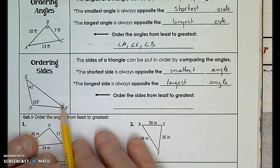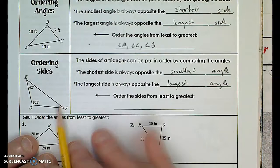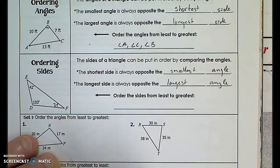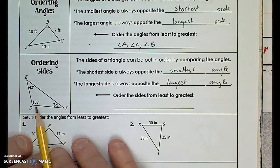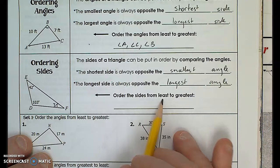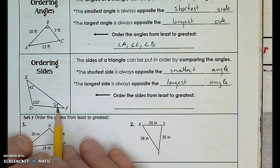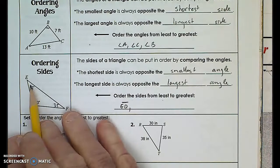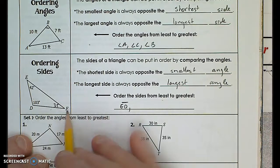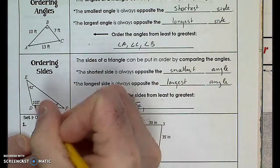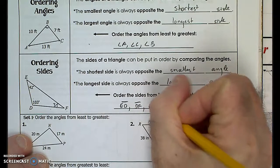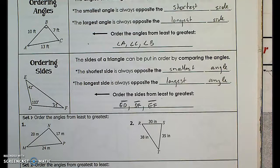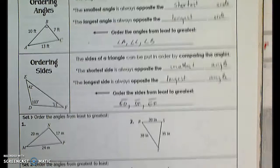Looking at this triangle over here, one angle is missing, but by the triangle angle sum theorem I can figure that out. 42 plus 103 is 145; 180 minus 145 is 35. So from least to greatest: the shortest side is opposite the smallest angle, so it's side ED. The next shortest will be opposite the next largest angle — side DF. And the longest will be opposite the largest angle — side EF.